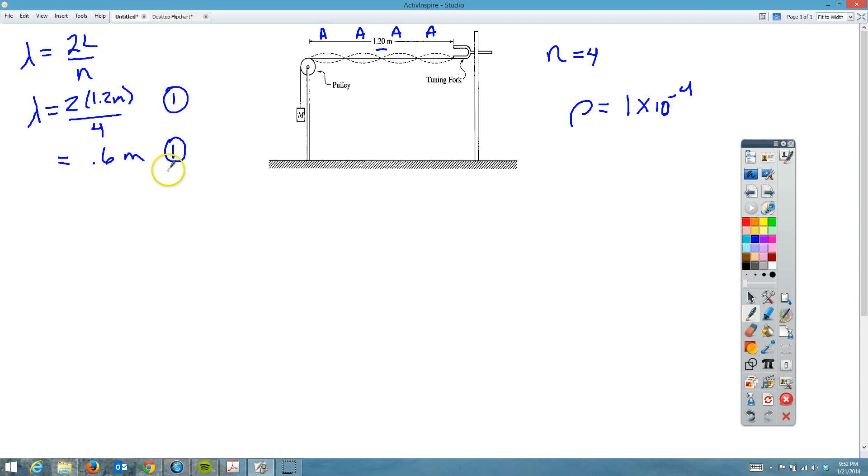For letter B, which is also worth two points, they want us to determine the speed of the wave as it travels on the string. We know that for waves, we have the speed equal to the frequency times the wavelength. The frequency for this one is 120 hertz and the wavelength is 0.6 meters.